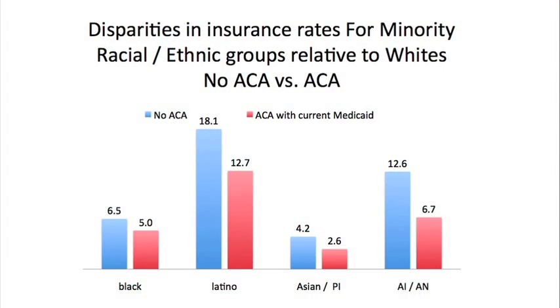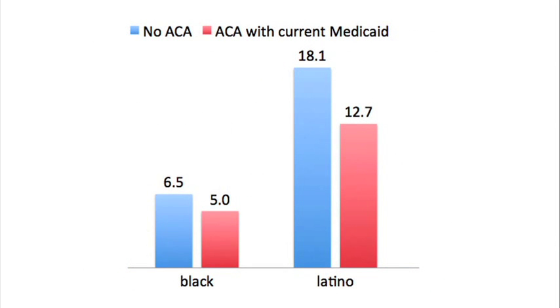Another way to look at it is to examine the gaps — relative uninsurance rates compared to the white population. Without the ACA, blacks were 6.75 percentage points higher. The gaps have shrunk for blacks, and the gaps have shrunk even more for Latinos.